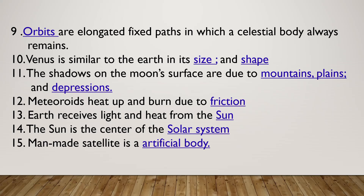Celestial bodies move in elongated fixed paths called orbits. Venus is similar to the Earth in its size and shape, making them twin planets.